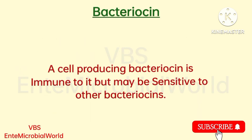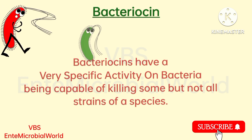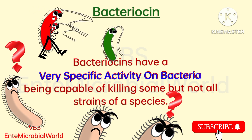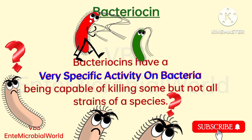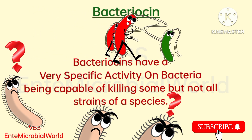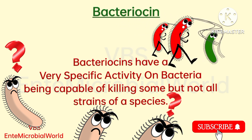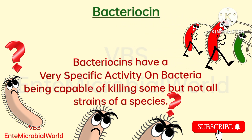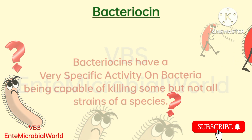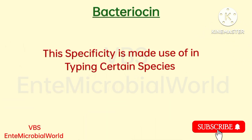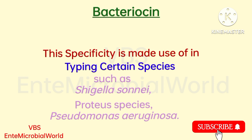A cell producing bacteriocin is immune to it but may be sensitive to other bacteriocins. Bacteriocins have a very specific activity on bacteria, being capable of killing some but not all strains of a species. This specificity is made use of in typing certain species.